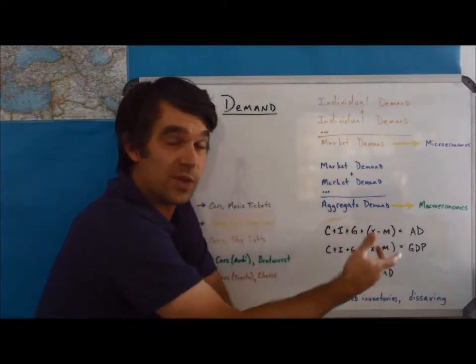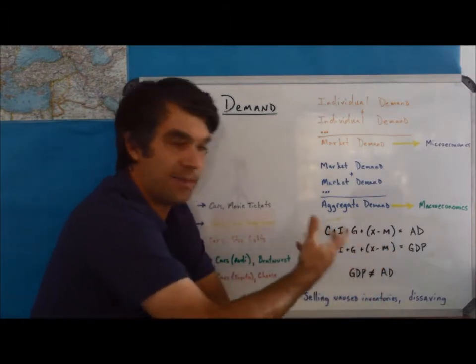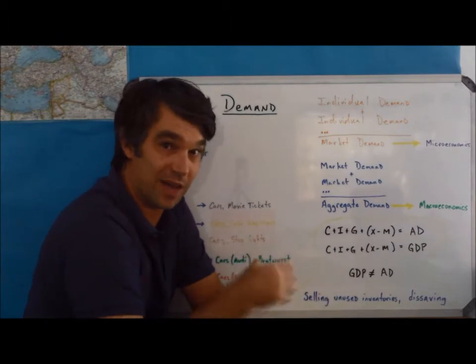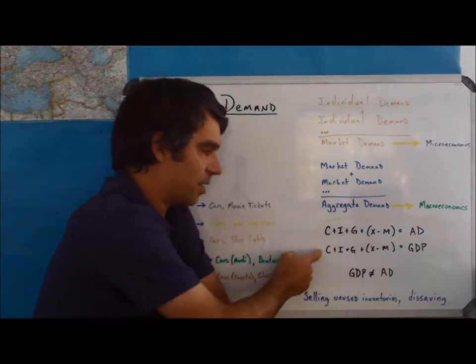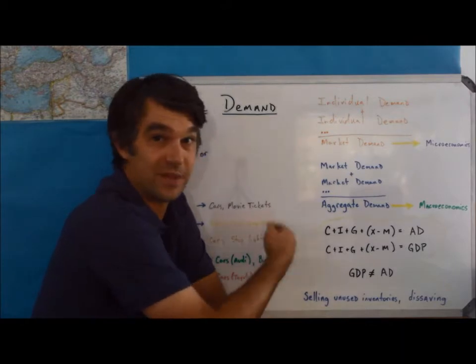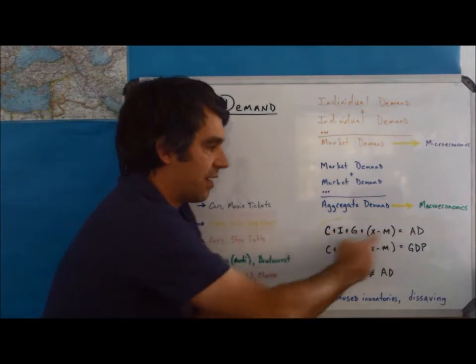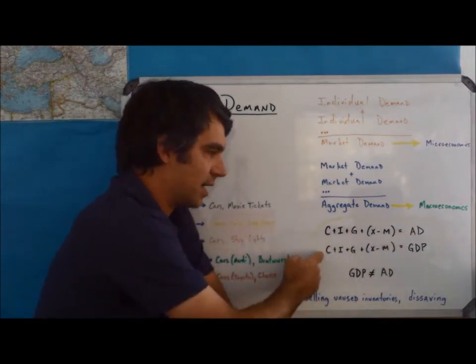But remember GDP in a way is also equal to national income. So remember everybody here got paid, it was income. Well, if I didn't earn that money this year, then it's not part of this year's GDP. If I earned it last year, or if somebody else earned it, I'm still spending it as part of aggregate demand, but it's not going to be part of GDP.